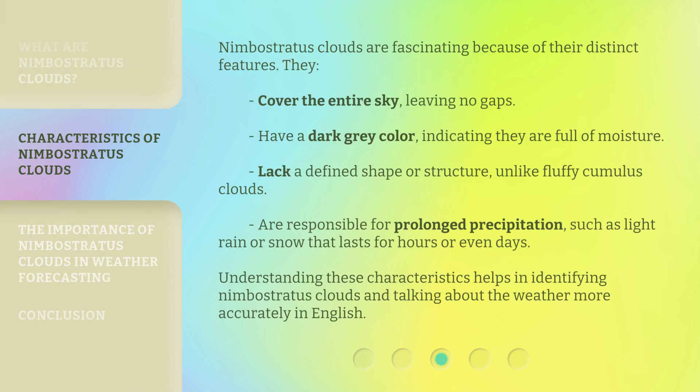Nimbostratus Clouds are fascinating because of their distinct features. They cover the entire sky, leaving no gaps, have a dark gray color indicating they are full of moisture, and lack a defined shape or structure, unlike fluffy cumulus clouds.